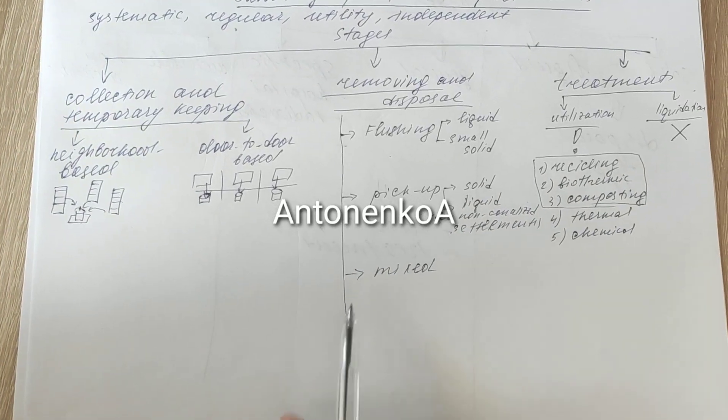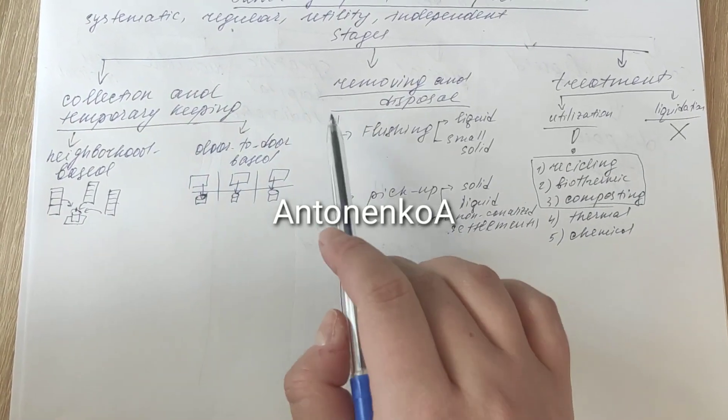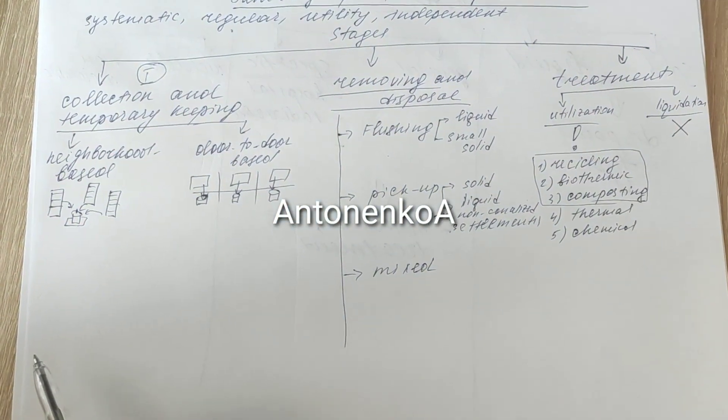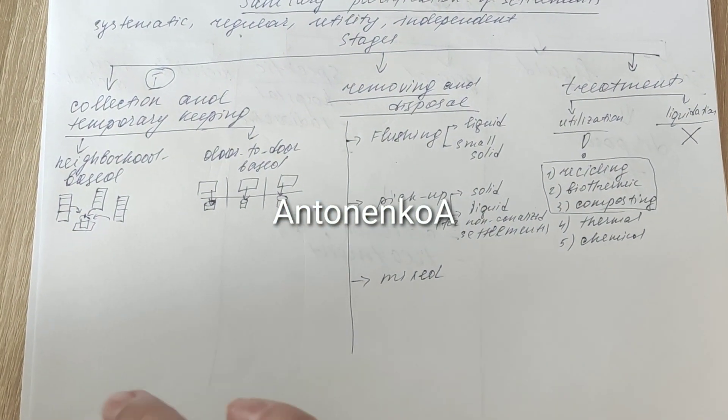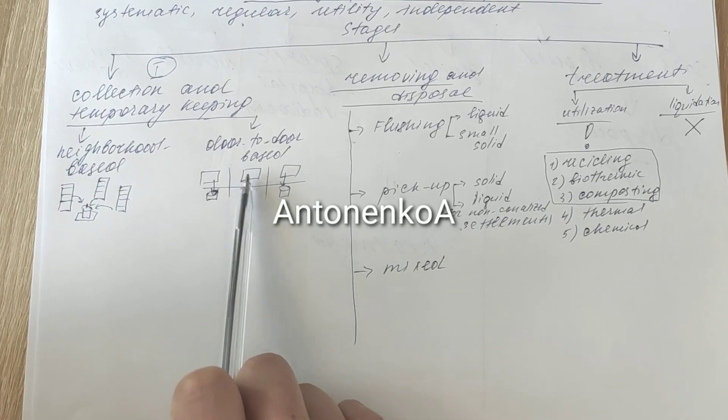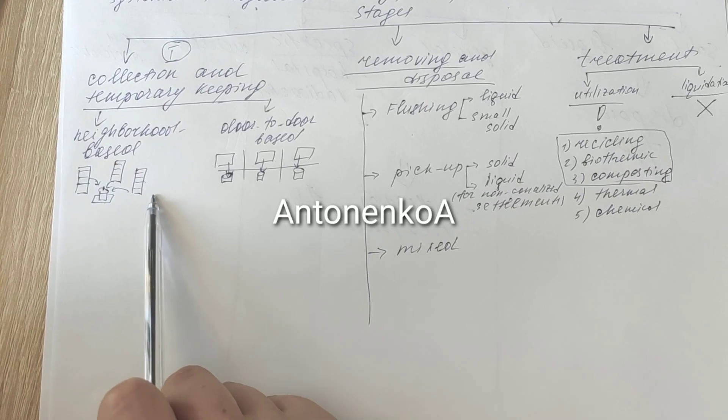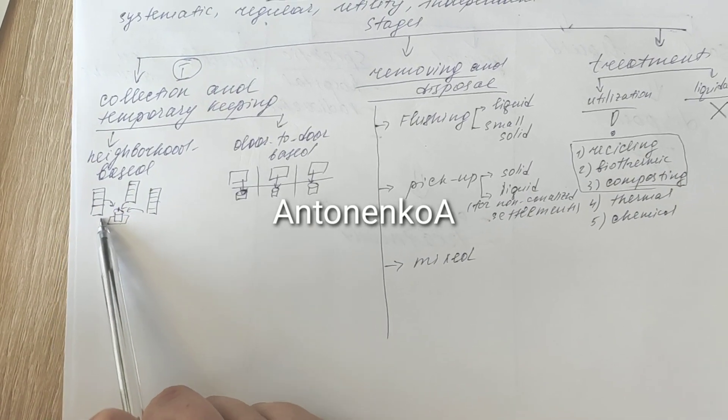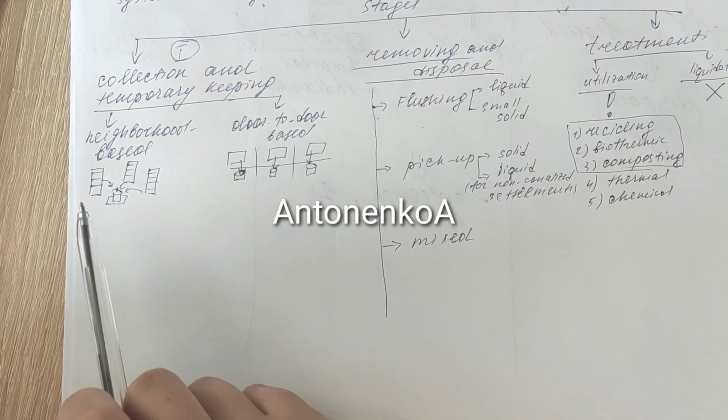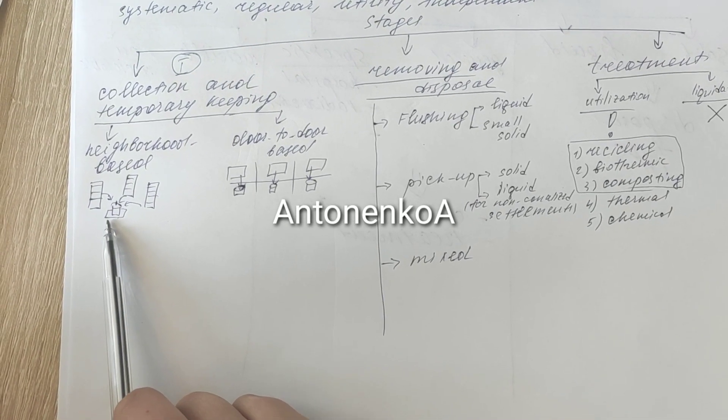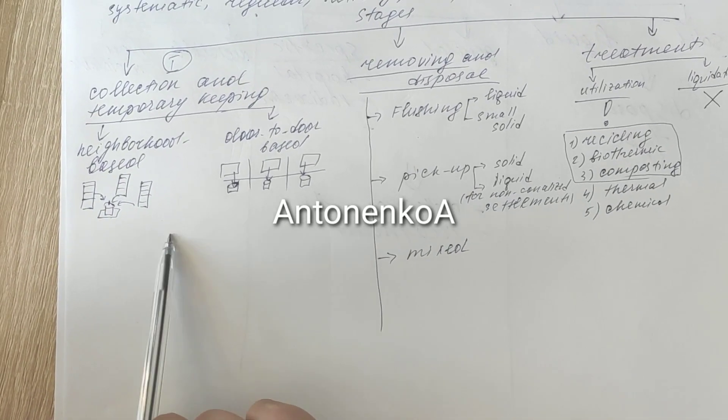Sanitary purification of settlements consists of three stages. Stage one: collection and temporary keeping. Basically we have two types, neighborhood based and door to door. Neighborhood based is mostly for multi-storied buildings in the city. We have one area with special buckets for the waste. It could be marked for separate collection.